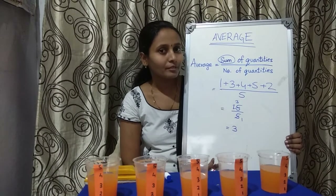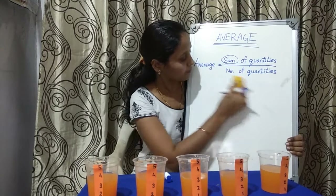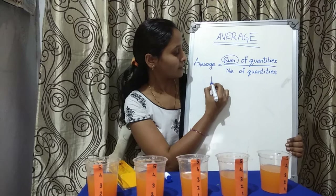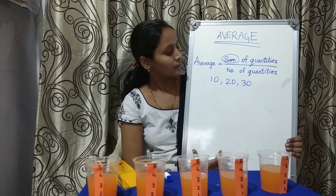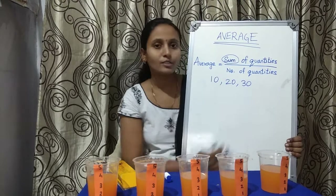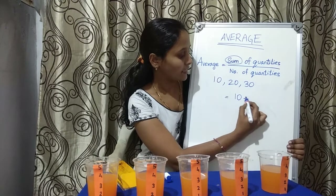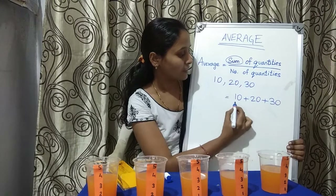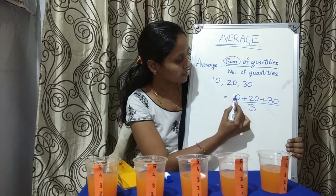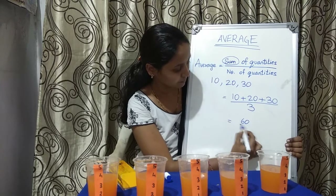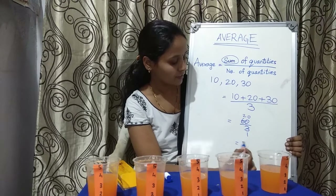Shall we see one more example of finding average using the formula? I will take a few values: 10, 20, 30. I want to find the average of this set of values using the formula. Sum of quantities means I have to add all these: 10 plus 20 plus 30, divided by the number of quantities, which is 3. The sum is 60 divided by 3, which gives us 20.